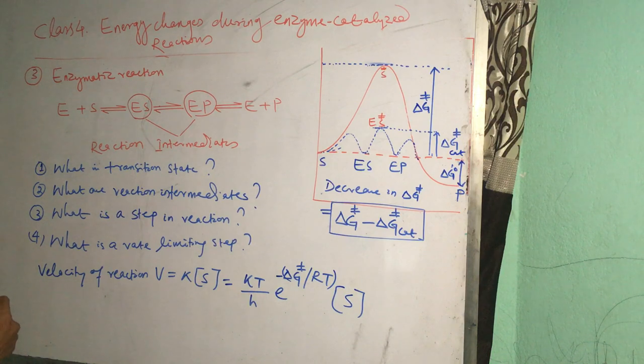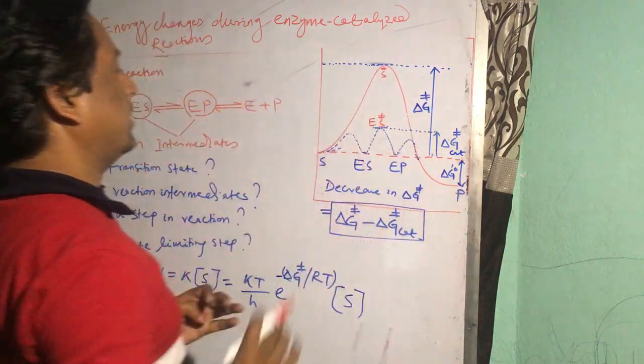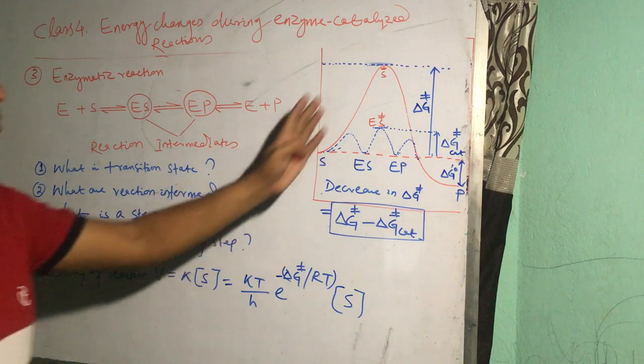So here how should we define a transition state? These are very important questions we need to answer. What is a transition state? The transition state is the highest energy species created during the conversion of substrate to product.